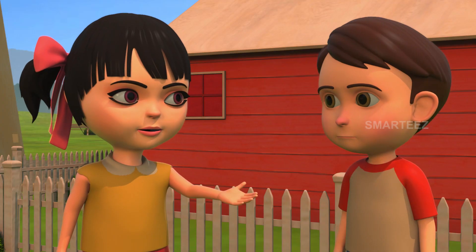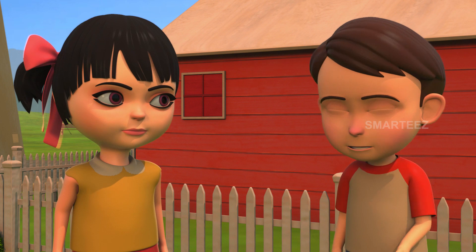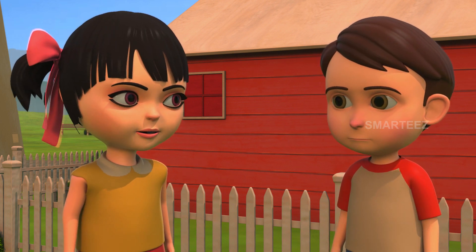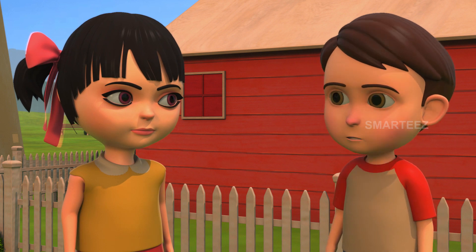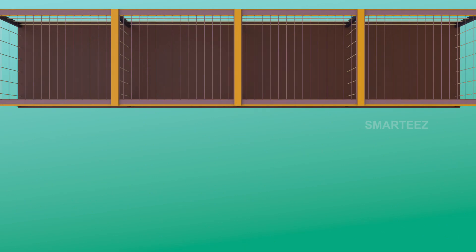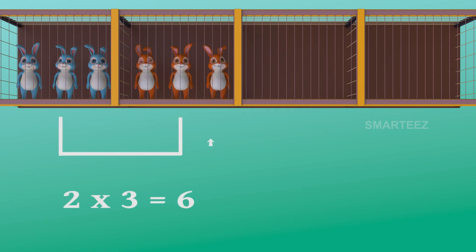The first cage had three bunnies. The second cage also had three bunnies. The bunnies in these two cages will make it six. Yes, two threes make it six. One three is three and two threes are six. The bunnies are in the cages as sets of three. The first cage had three bunnies, and when the second cage of three bunnies was added to the first cage, it became six. So two sets of three bunnies make it six bunnies.